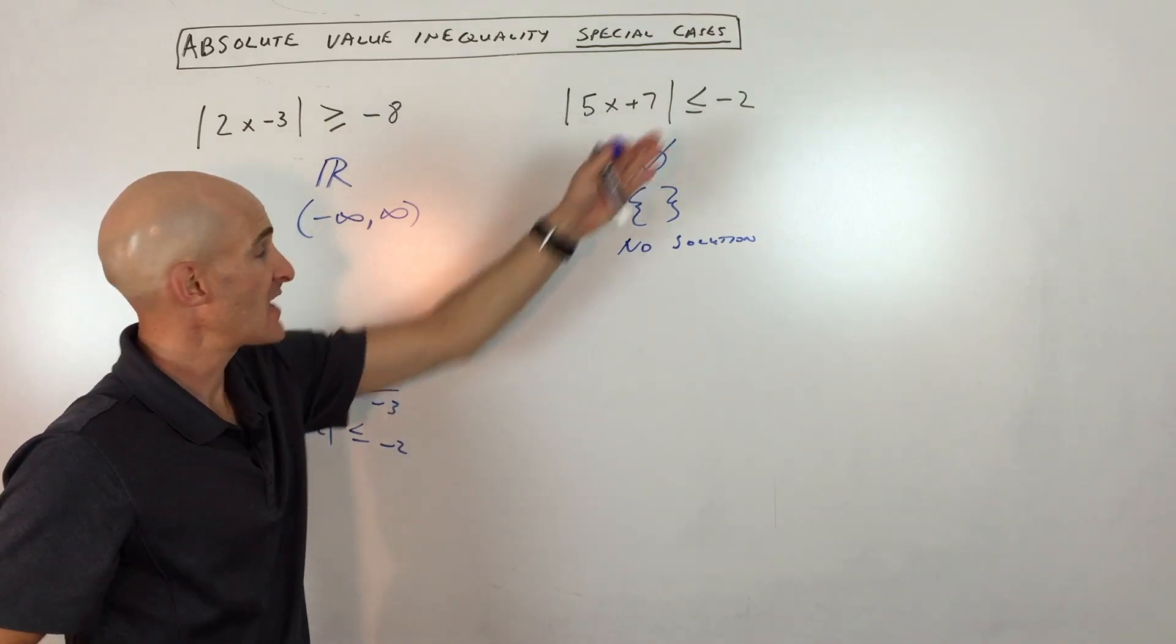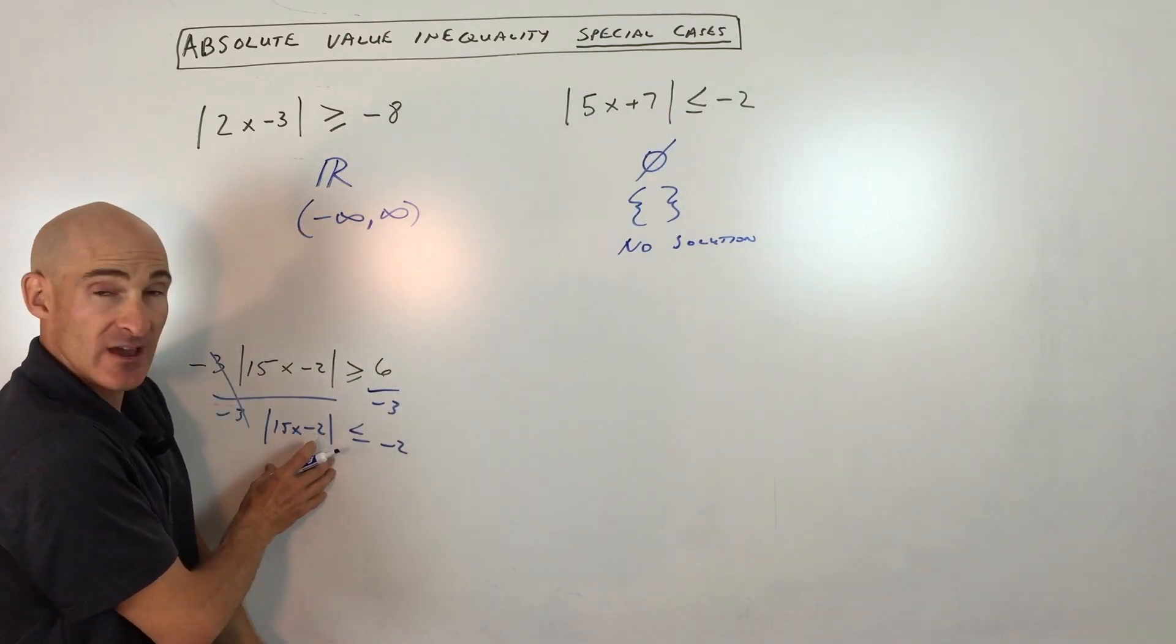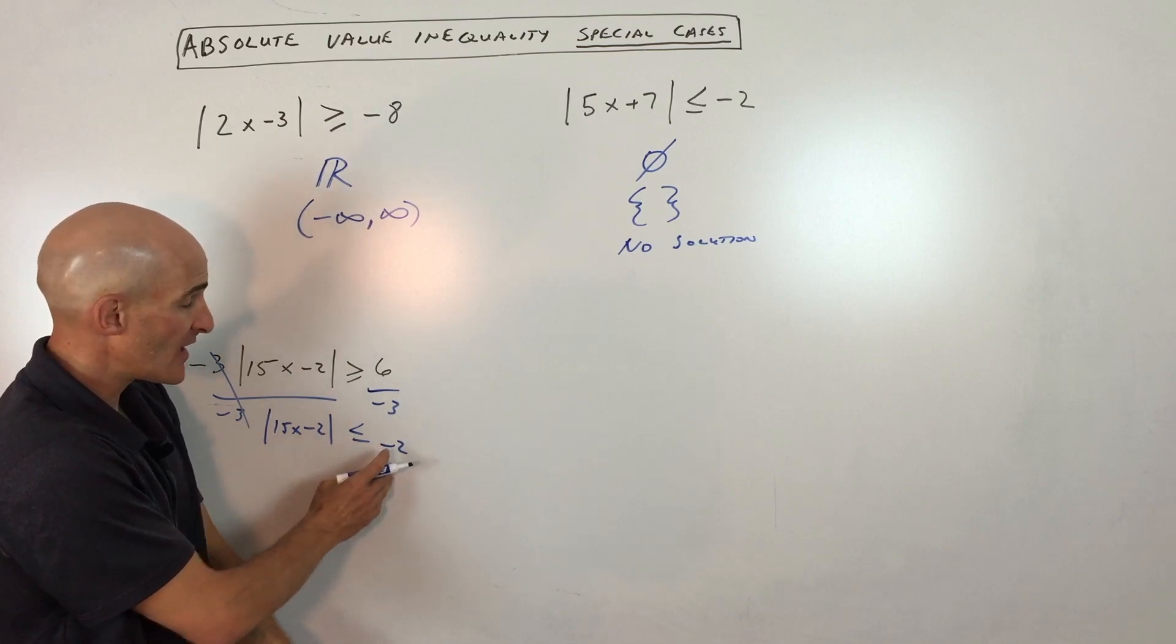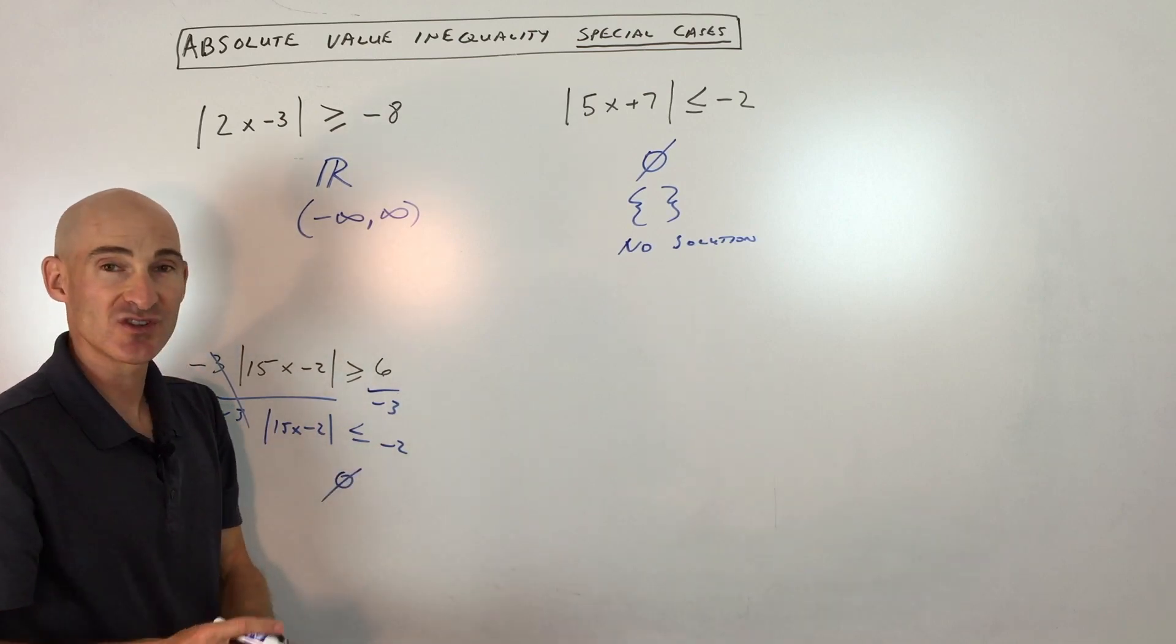And now we're back to what we were dealing with in this case here. Whatever is here is going to be zero or greater. It can never be less than or equal to negative 2. So there's actually no solution to this problem.